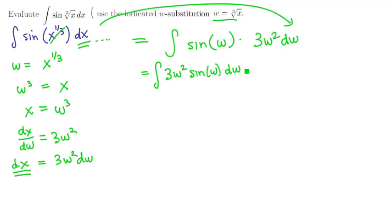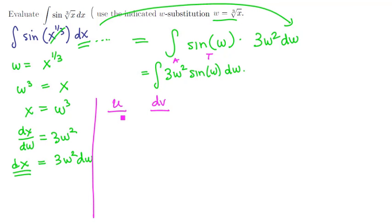So how do we attack this new integral? Notice that it is a product of an algebraic function and a trigonometric function, so integration by parts would be the way to go. We'll let u be the algebraic function, dv be the trigonometric function, and we'll start building tables.